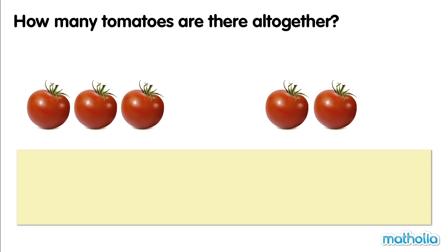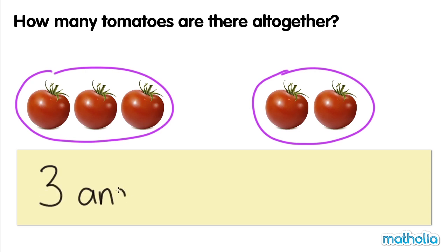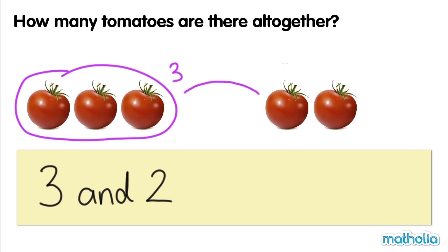How many tomatoes are there altogether? There are three tomatoes and there are two tomatoes. Three and two — let's add the tomatoes together by counting on: three, four, five. There are five tomatoes altogether. Three and two make five.